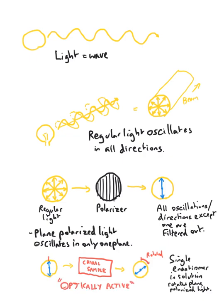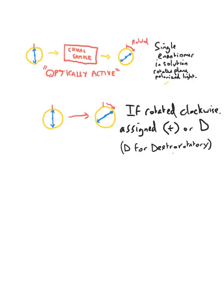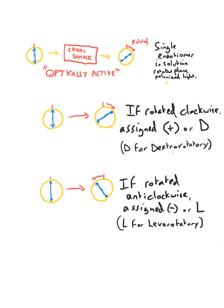If the rotation occurs clockwise, we assign it a positive or a D, D for dextrorotatory, so that we know that that sample rotates it to the right. Whilst if it rotated anticlockwise, it's assigned a negative or L, L for levorotatory, i.e. it rotated towards the left.